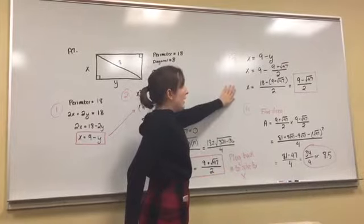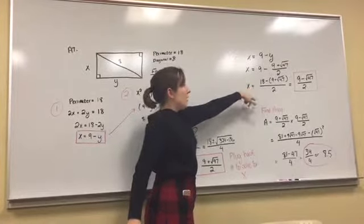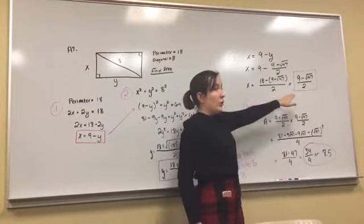After doing that, you have to find a common denominator with the 9 minus y. 18 over 2 minus what you have for y. You get 9 minus the square root of 47 over 2.